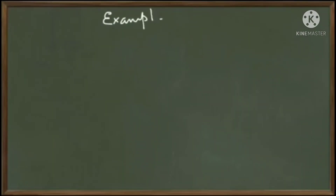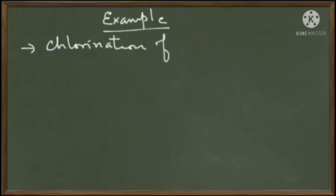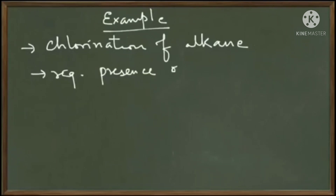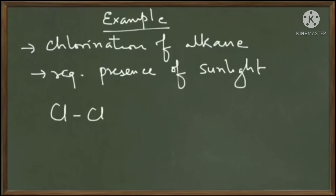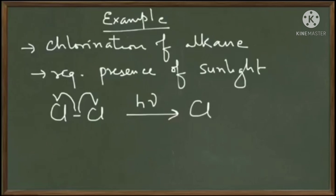As an example reaction, you must have heard about the chlorination reaction of alkanes. It requires the presence of sunlight, which indicates that the reaction proceeds by homolytic cleavage. Here is how free radicals are formed: we have a chlorine molecule Cl₂, and in the presence of sunlight it breaks homolytically — each chlorine atom takes up one electron and forms a free radical. We will discuss this reaction in detail when we reach the topic of alkanes.